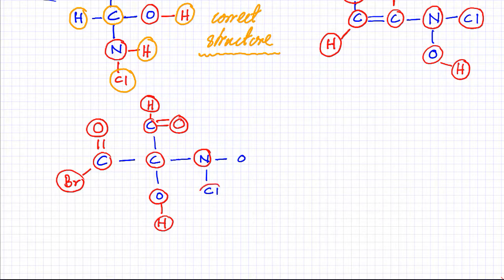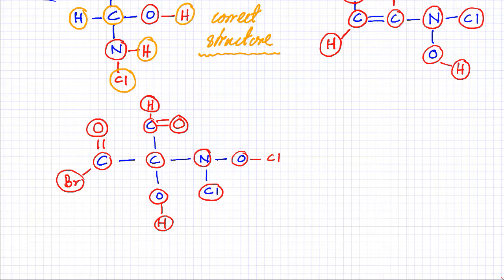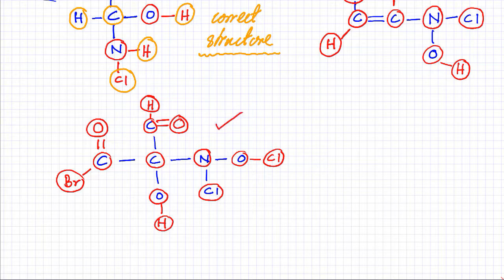Looking at chlorine: it was supposed to make one bond and it's making that. Looking at the remaining oxygen: it was supposed to make two bonds but it's only making one bond here. Let's make another bond with another chlorine atom. Now this oxygen atom is correctly drawn — it's making a total of two bonds. And this chlorine is also correct — halogens make one bond. So this entire structure is now drawn correctly.